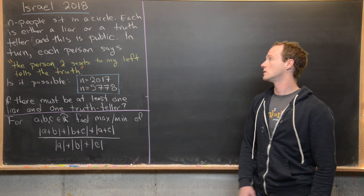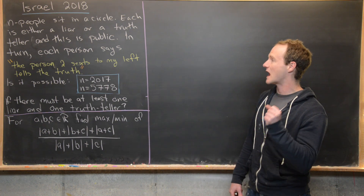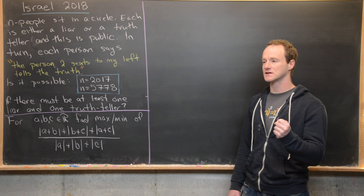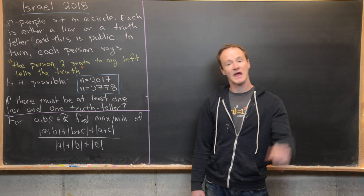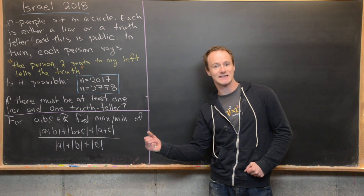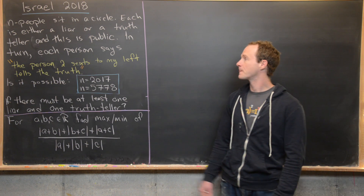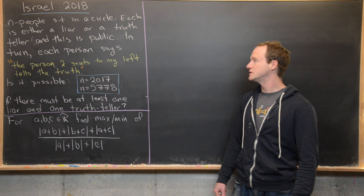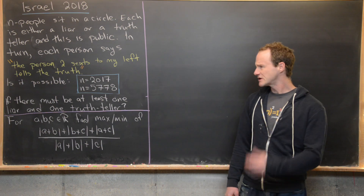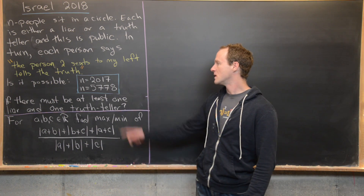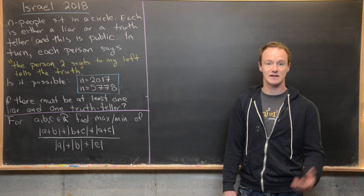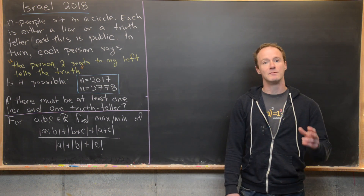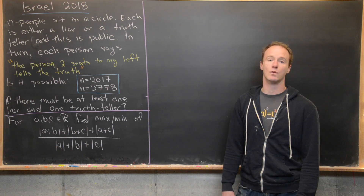In the first problem, N people are sitting in a circle. Each person is either a liar or a truth teller, and this knowledge is public — every person either always tells a lie or always tells the truth, and each person knows the status of every other person. Then in turn, each person says the statement: 'The person two seats to my left tells the truth.' The question is whether it is possible for N to equal 2017 or 5778.